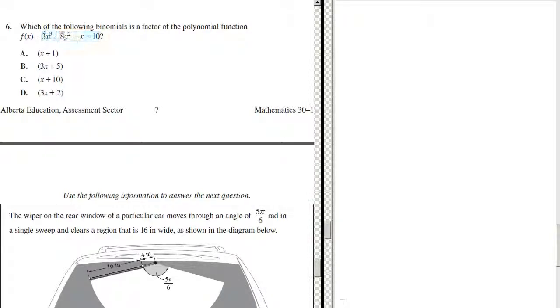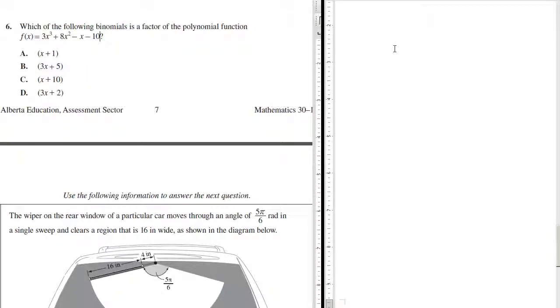So let's take negative one and plug it into this equation: three times negative one cubed, plus eight times negative one squared, minus negative one, minus ten. If this equals zero, then we know that we have the right answer. So let's work this out. Negative one cubed is still negative one, which is negative three.